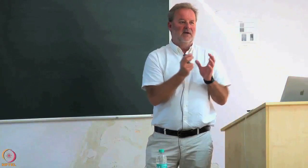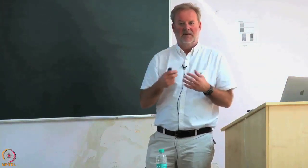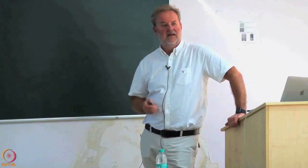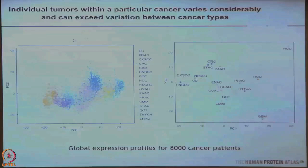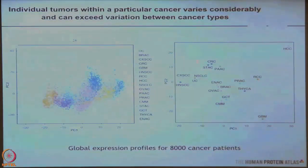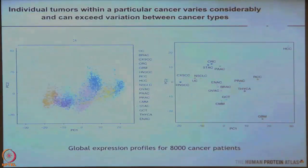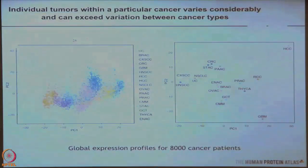We start to think that cancer might not be so organ-specific — for surgery it is very important, but when it comes to tumor-biological approaches to treat cancer, one has to think of other ways of classifying cancer, not just based on anatomy. Hepatocellular carcinoma stands out quite clearly; glioma stands out a bit too. When looking at means rather than all 8,000 patients, you can see some clusters: gastrointestinal tract tumors, hormone-driven cancers like breast, endometrial, ovarian, and prostate cancer, and glioblastoma.